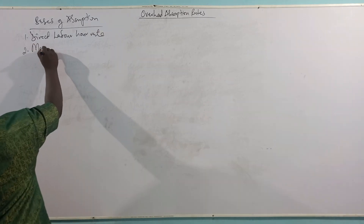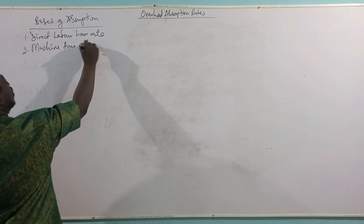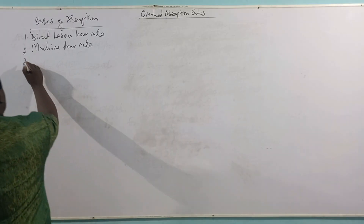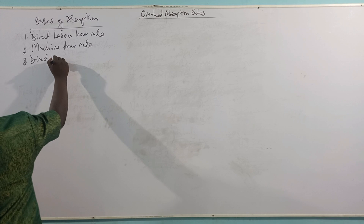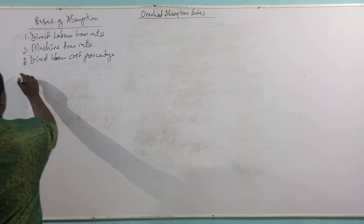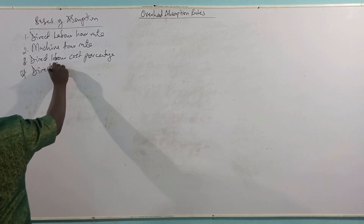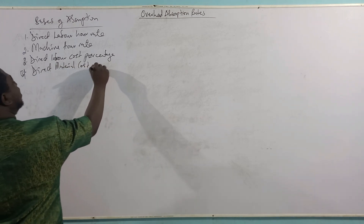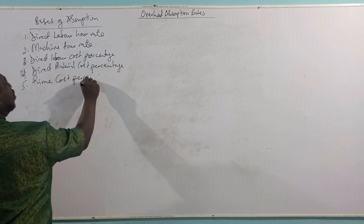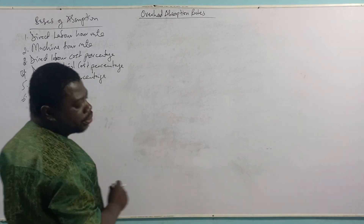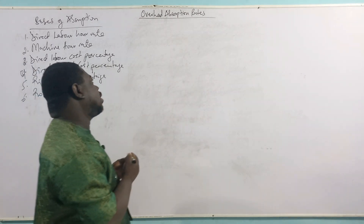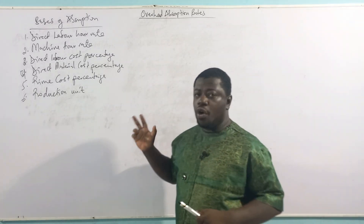We can also talk about the machine hour rates. And then we can also talk about the percentages. So we have the direct labor cost percentage, the direct material cost percentage, the prime cost percentage, and finally the production units as a base. These are the six bases of Overhead Absorption.